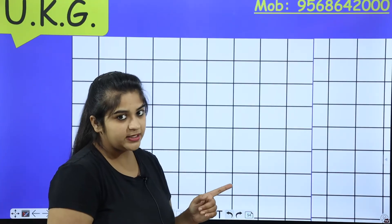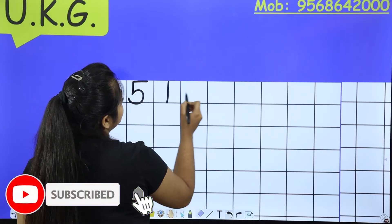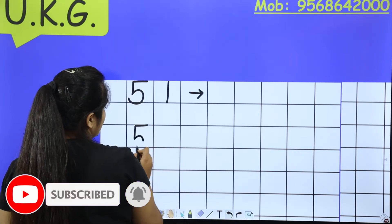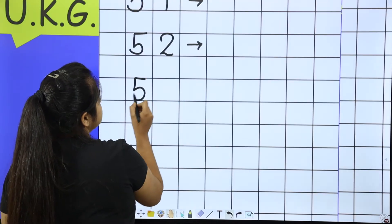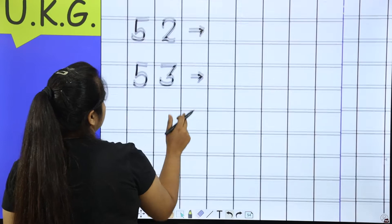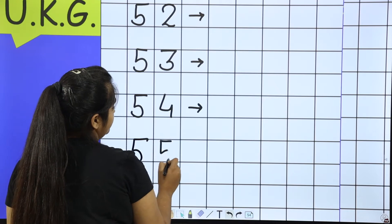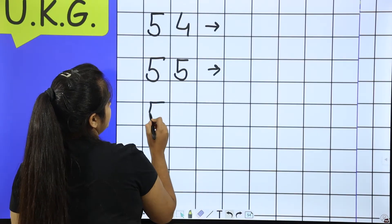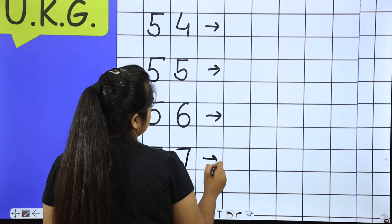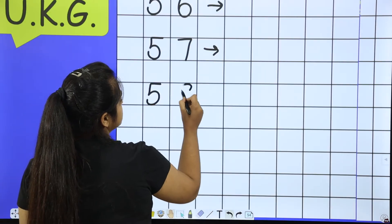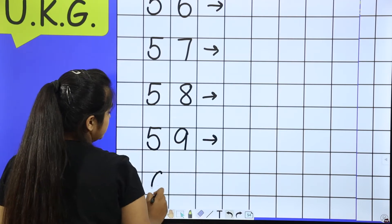So I will open my math notebook with you and complete it with you. First of all, I am counting: 51, 52, 53, 54, 55, 56, 57, 58, 59, and last is 60.